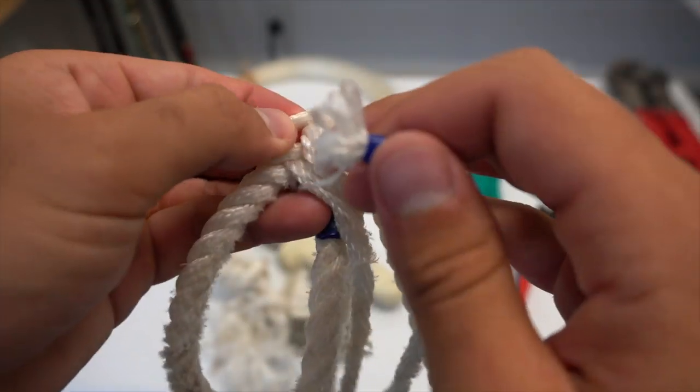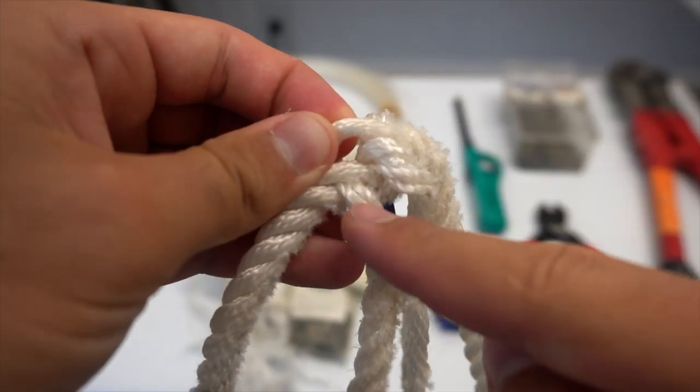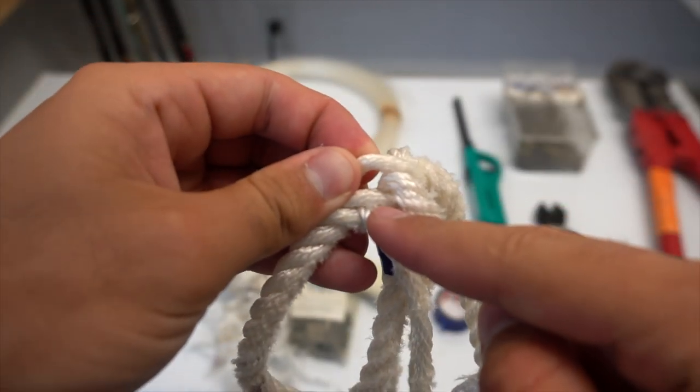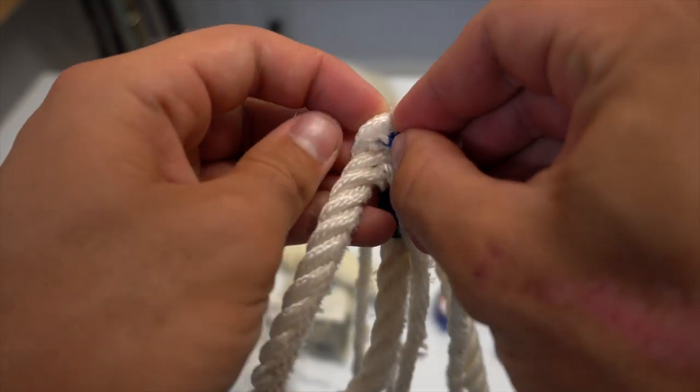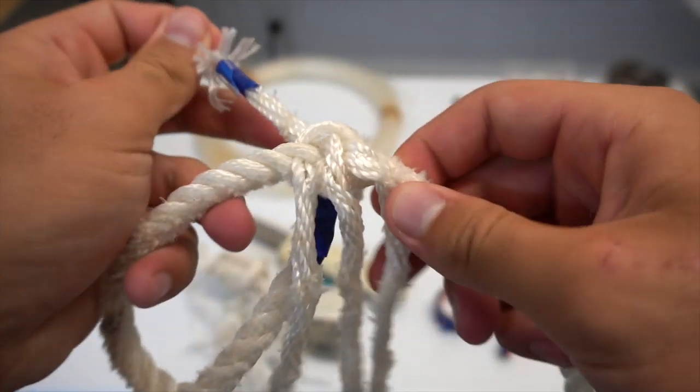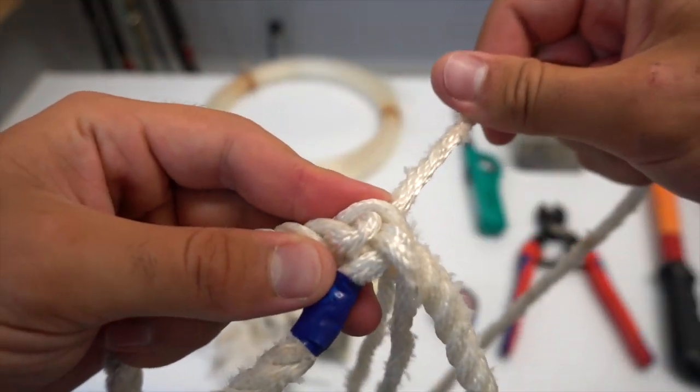So this is where it could get a little bit confusing. You want to take the first strand where it comes out from underneath the first gap you made and go over the next strand and under the one that's behind it by making the gap and braiding it through. Again, each time you want to make sure you pull all the way through and pull it tight.